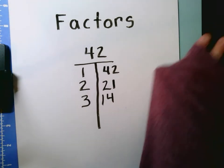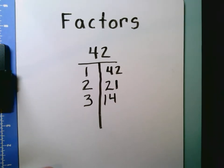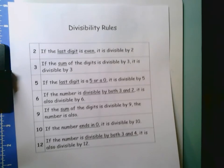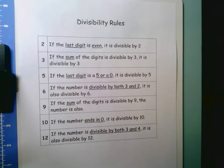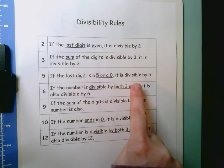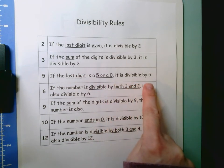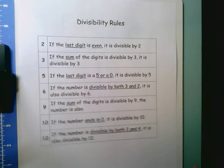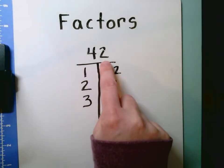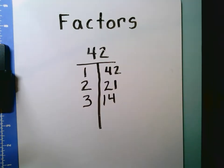The next number on our number line is 5. If I use my divisibility rules, I know that if the last digit is a 5 or a 0, the number is divisible by 5. When I look at 42, the last digit is a 2, not a 5 or a 0, so 5 is not a factor of 42.